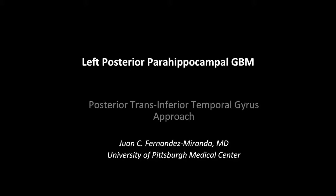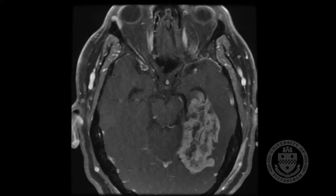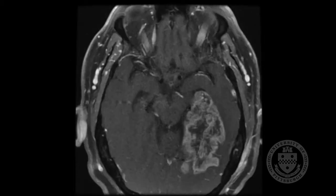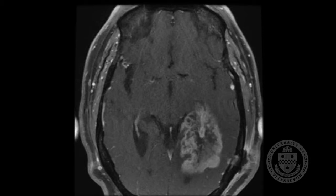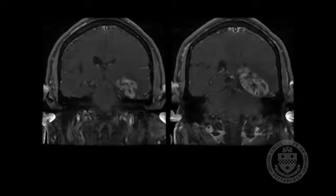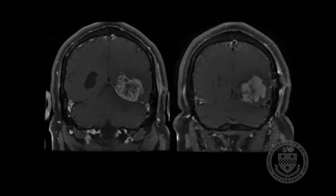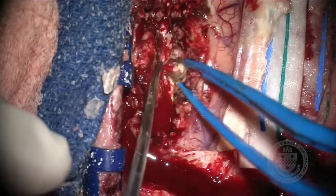This is the case of a 55-year-old male patient that presents with a very large tumor mass compatible with a glioblastoma located in the medial temporal lobe, parahippocampal gyrus, left-sided, extending towards the occipitotemporal gyrus and all the way anteriorly into the posterior aspect of the uncus and the hippocampal head.